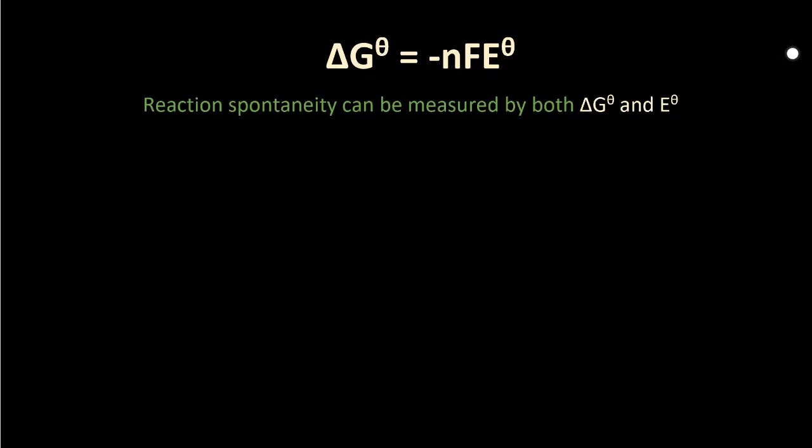So far you've learned that reaction spontaneity can be measured by both delta G and by E. Delta G is the change in Gibbs free energy and E is the voltage when you make an electrochemical cell. What links these two concepts together is the equation above, which you don't have to learn because it's in the data booklet, but you do have to know how to manipulate it.